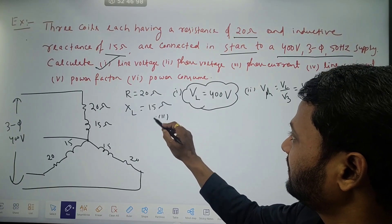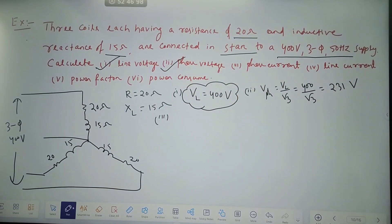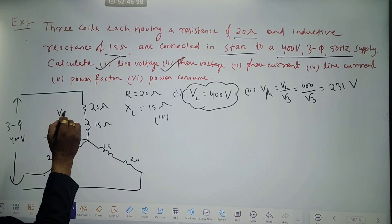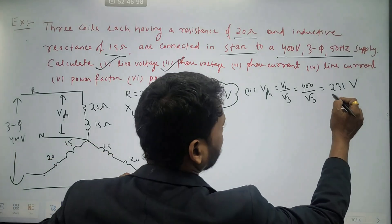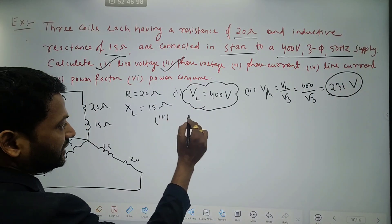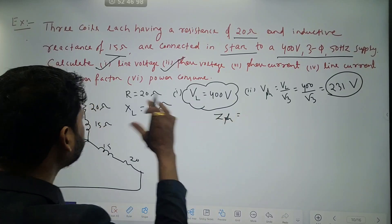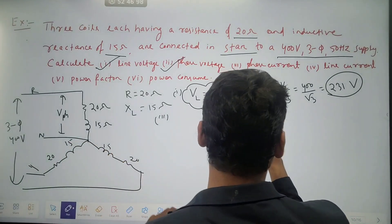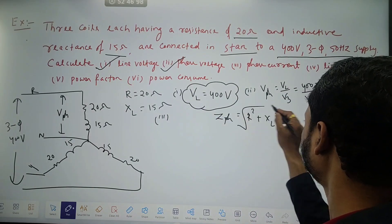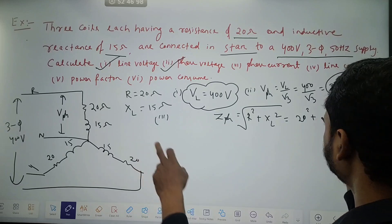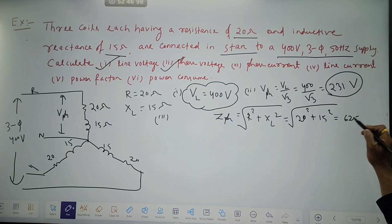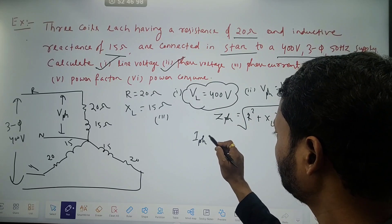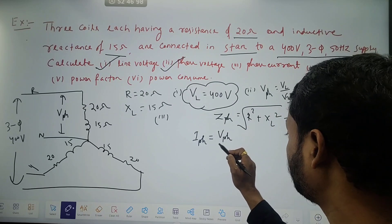So this is phase voltage. Third bit: what is phase current? We got phase voltage, now we need phase impedance. Impedance per phase is the square root of R squared plus XL squared. R is given as 20, XL is 15, so it is square root of 20 squared plus 15 squared — that is square root of 400 plus 225, which equals square root of 625, coming to 25 ohms. So phase current is phase voltage by phase impedance.